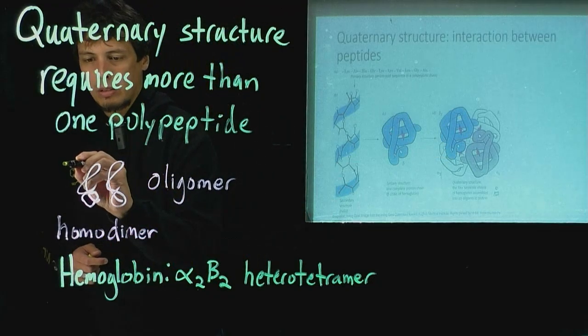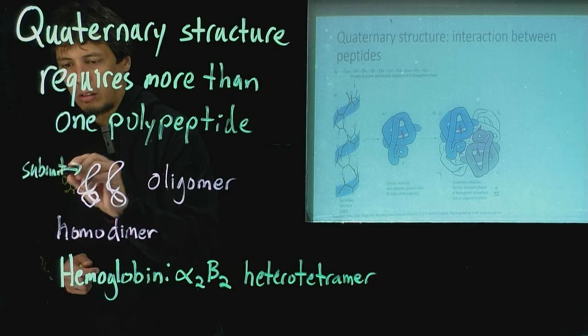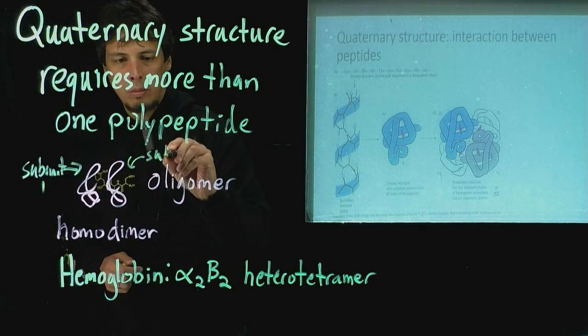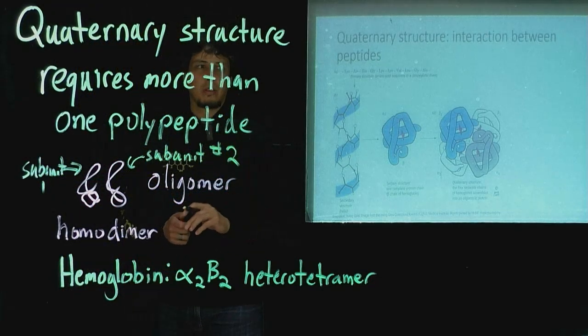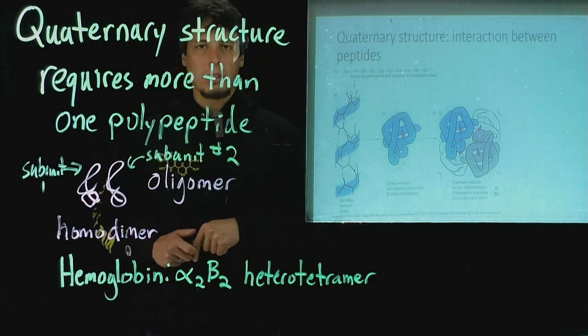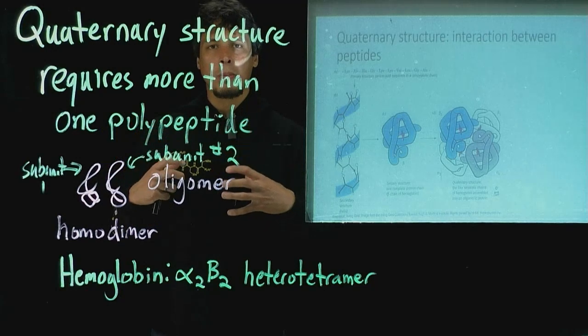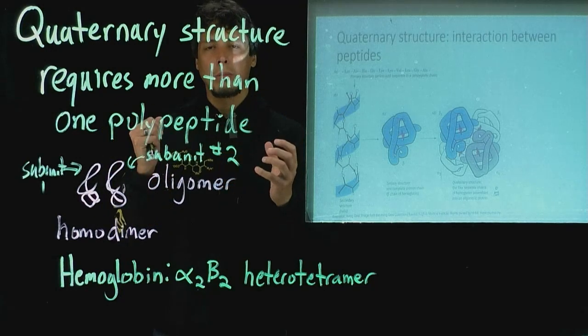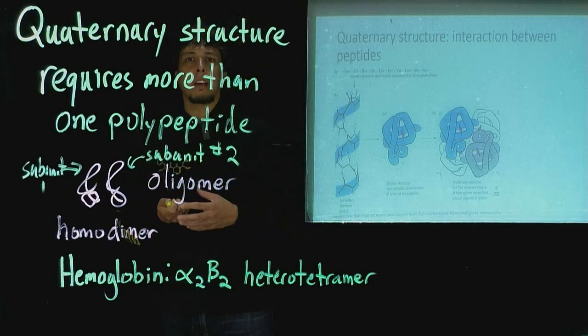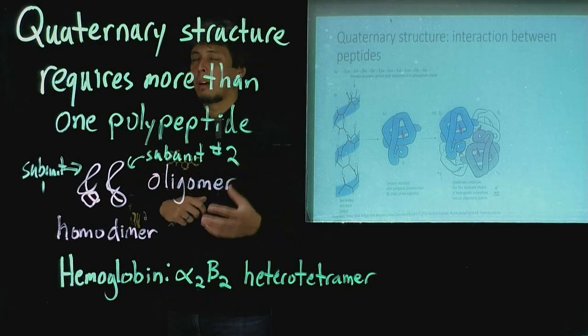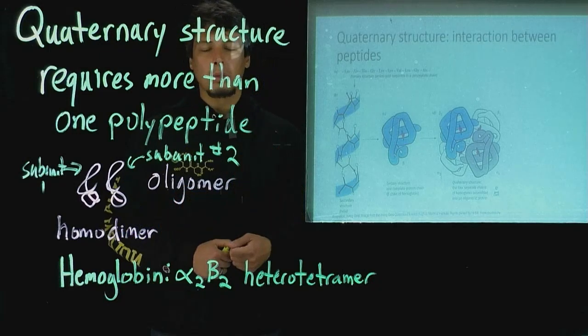Here's, for instance, in our previous example, here's one subunit, subunit number two. Polypeptides can then interact with each other to form the entire protein, and sometimes this quaternary structure is really important for the function of the protein. In fact, it can define, as we'll see when we talk about myoglobin and hemoglobin, the major difference in the function between those two proteins.